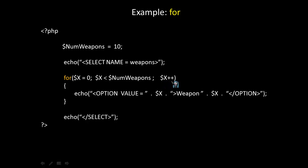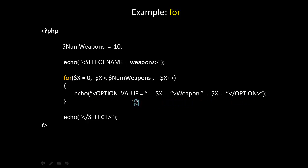Within the body of the for loop, the echo statement will be called repeatedly. In the selection structure, it will simply add weapon 0, 1, 2, 3, 4, 5, 6, 7, 8, 9. Finally, we close the structure when we get outside the for loop.